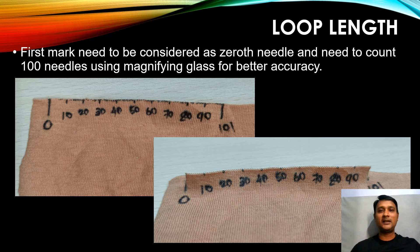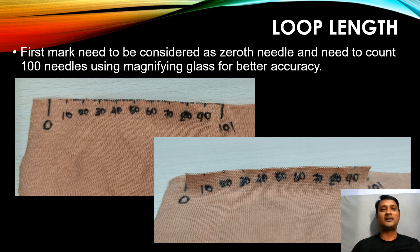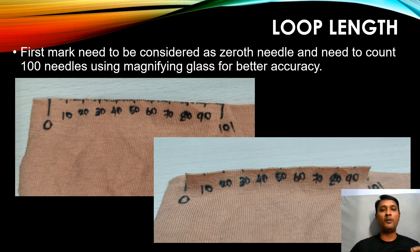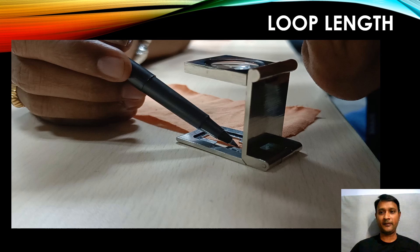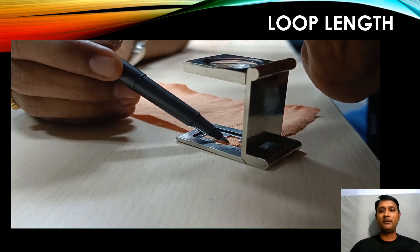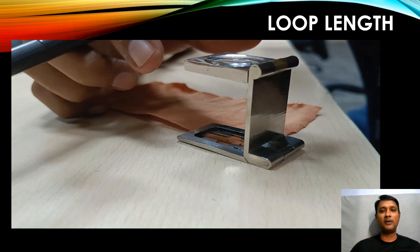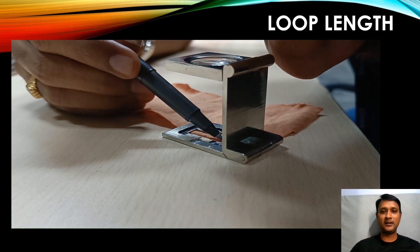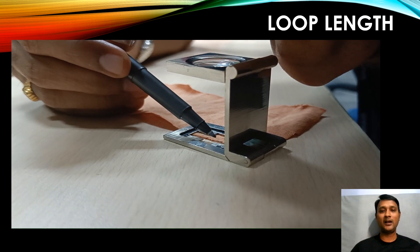The method I use for checking loop length gives me very good accuracy. I mark two vertical lines — one on the 0th needle and another on the 101st needle. To count the number of needles accurately, I use a magnifying glass. I give a special mark for every 10th needle so it is easy to count or recount the needles.